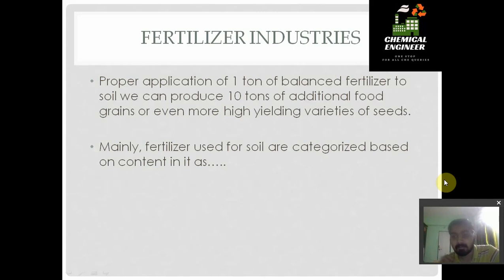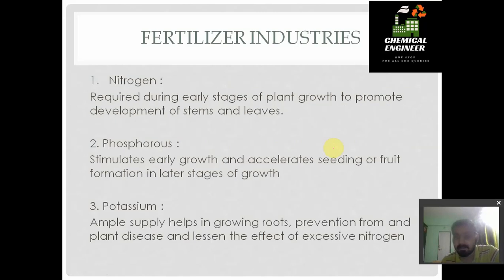Chemical engineers generally produce fertilizers based on nitrogen, phosphorus, and potassium. Fertilizers used for soil are characterized by the constituent elements present in them — nitrogen, phosphorus, and potassium. You have to decide when to use which fertilizer. Nitrogen fertilizer is generally used to promote the development of stems and leaves.